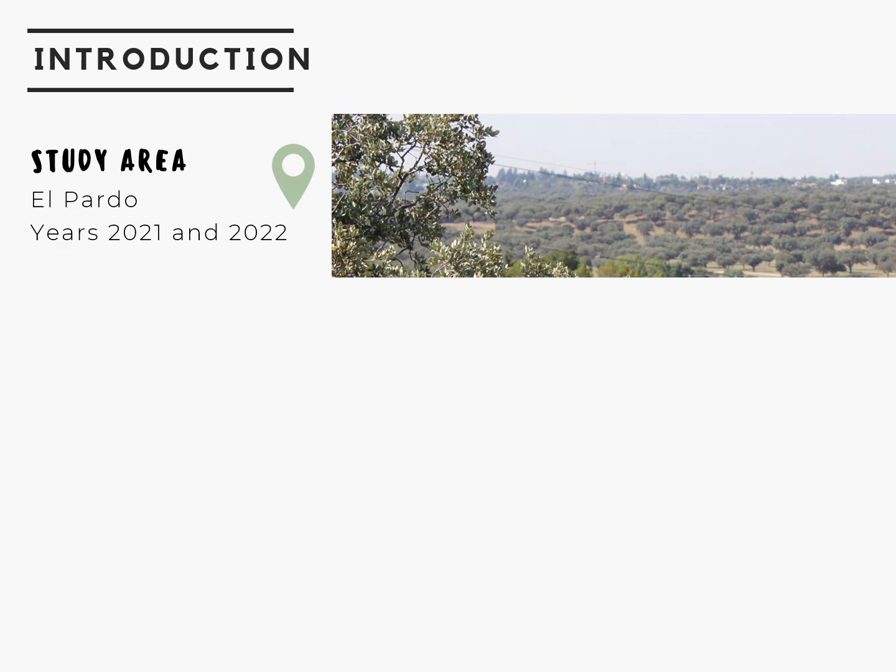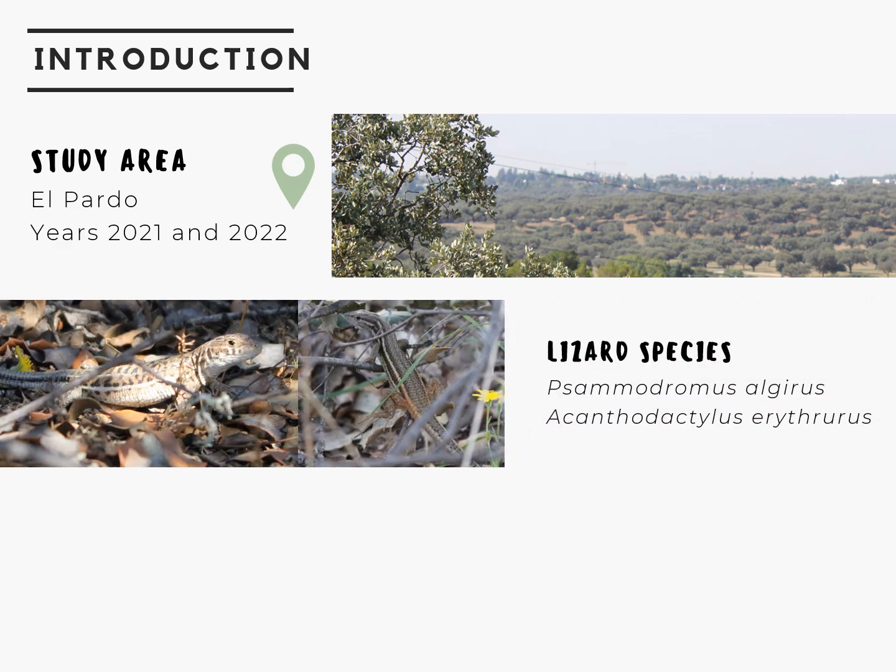Lizards were sampled in two areas that differ in the influence of a road, from April till September in two consecutive years. Two species of lizards have been studied: Psammodromus algirus, a medium-sized short-lived lizard with a widespread distribution in shrub and scrubland Mediterranean habitats from the Iberian Peninsula, and Acanthodactylus erythrurus, a medium-sized lizard with a shorter lifespan distributed in the center and south of the Iberian Peninsula,